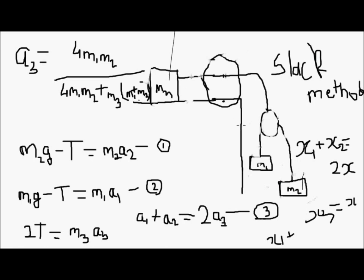We have to first use the slack method, which is quite easy — it is a kind of common sense method. We give a slack of x by moving this pulley down by distance x.